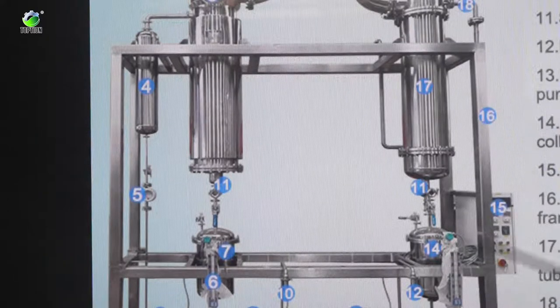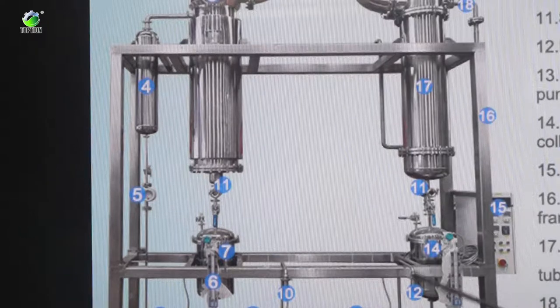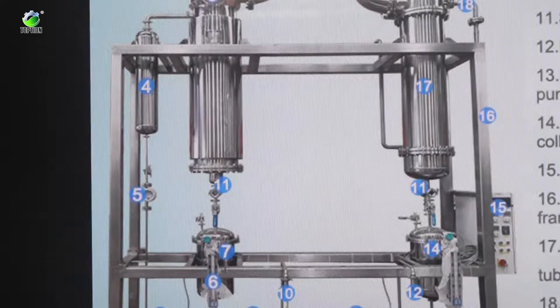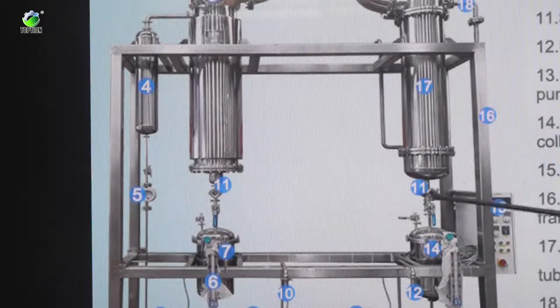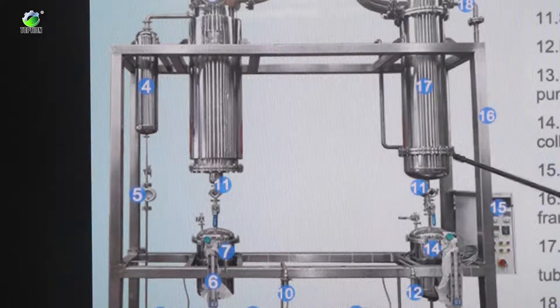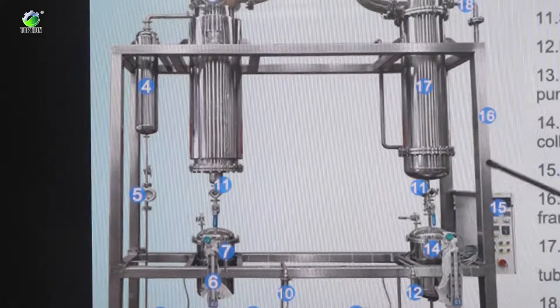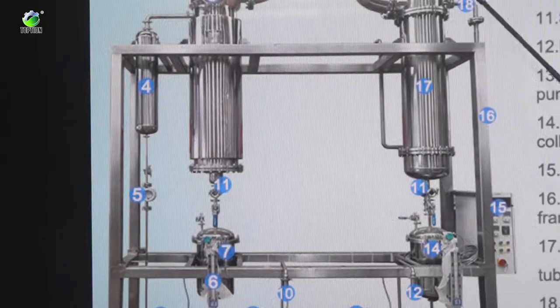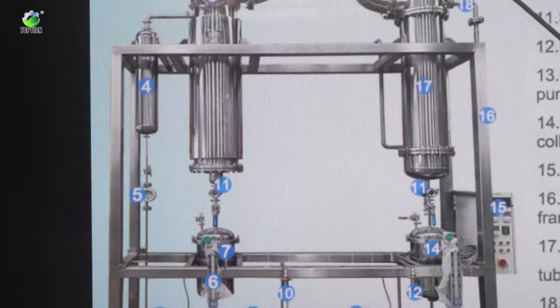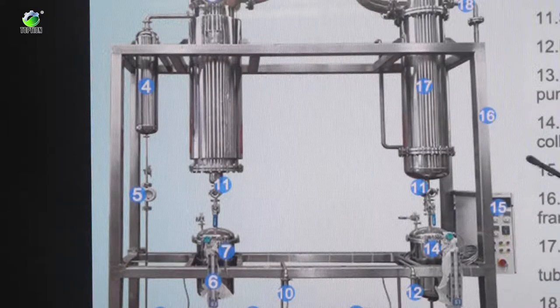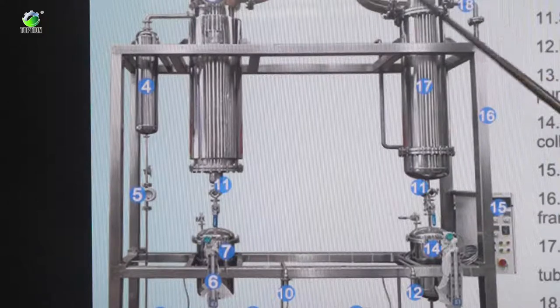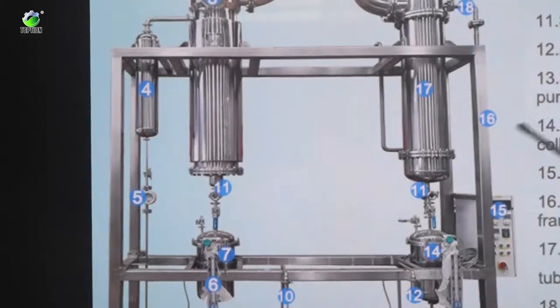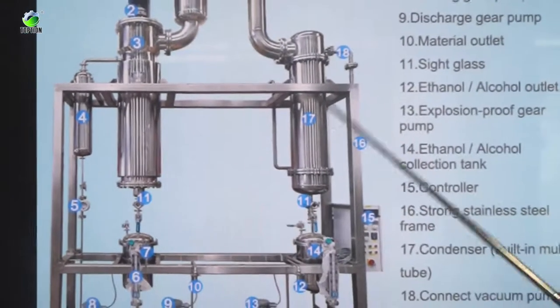And this one, the frame is strong stainless steel frame to support all this system. And the seventeeth, this large part is the condenser. With condenser there are many built-in tubes. And the eighteenth is connected vacuum pump. Vacuum pump will be connected here. And the last one is here. This is built-in stainless steel wire packing here. This is the whole structure of wiped film evaporator.